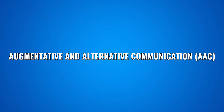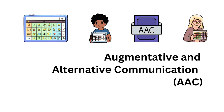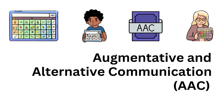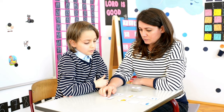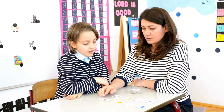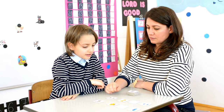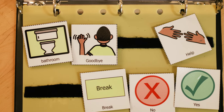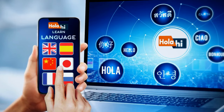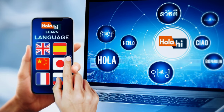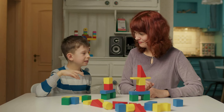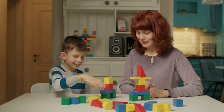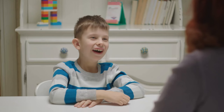The first tool we will discuss is Augmentative and Alternative Communication. AAC refers to any tool or strategy that helps individuals with autism communicate beyond traditional speech. This can include visual supports such as picture cards or boards, communication apps on smartphones or tablets, or speech-generating devices. These tools can help individuals with autism express themselves more easily and understand what others are saying.